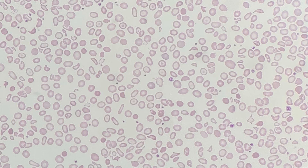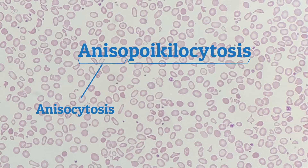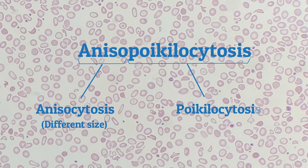Anisopoikilocytosis is the amalgamation of two other words: firstly, anisocytosis, which means a variation in cell size, and poikilocytosis, which means a variation in cell shape.